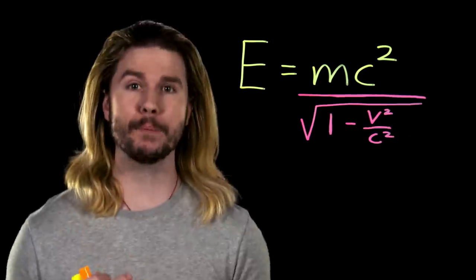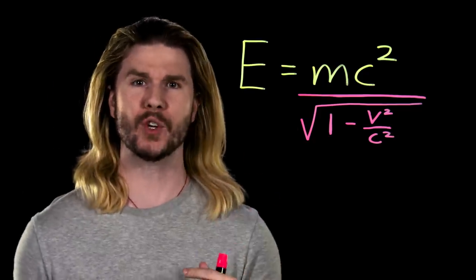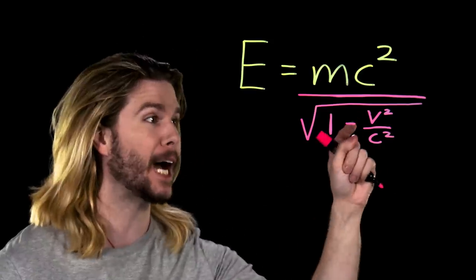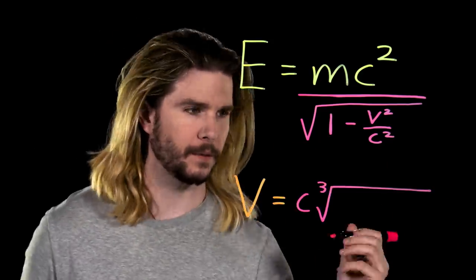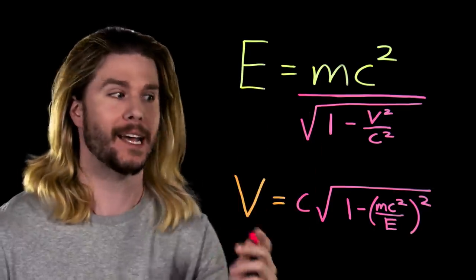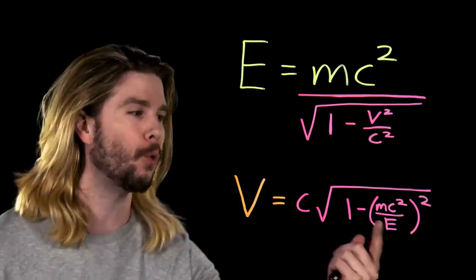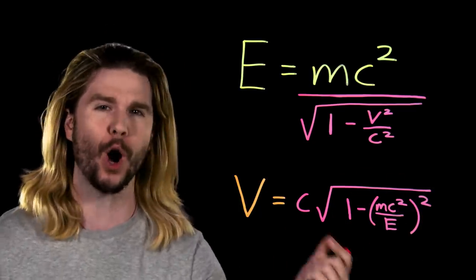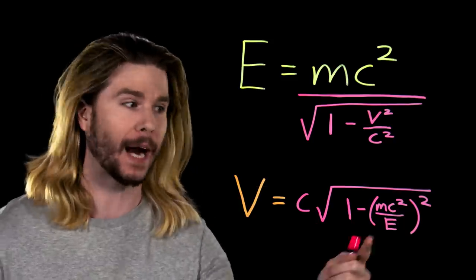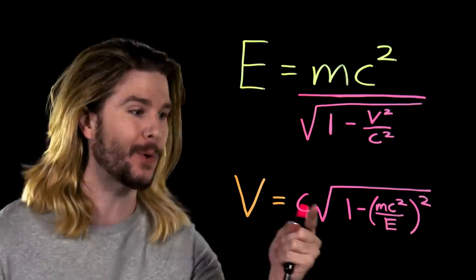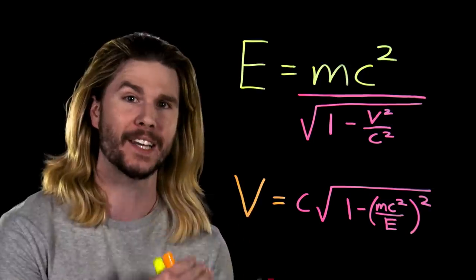The total energy of an object will change if that object is moving, and so you can also derive this form of the famous equation, one that takes into account the object's velocity in relation to the speed of light. If you do a little bit of algebra, you can solve for velocity in this context, and you see that no matter how much energy you add to a body with mass, this part of the equation will always be less than one. Which means that no matter how big this energy gets, it's always going to be some fraction of c and never c itself, the speed of light, or beyond c.